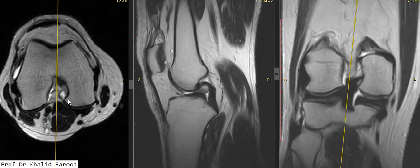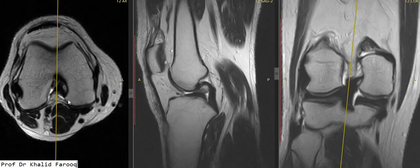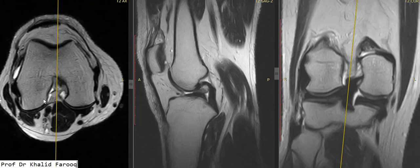Here this is axial T2 weighted sequence. This is the posterior cruciate ligament, medial femoral condyle, and this is the lateral femoral condyle — the intercondylar notch. We cannot see the anterior cruciate ligament.